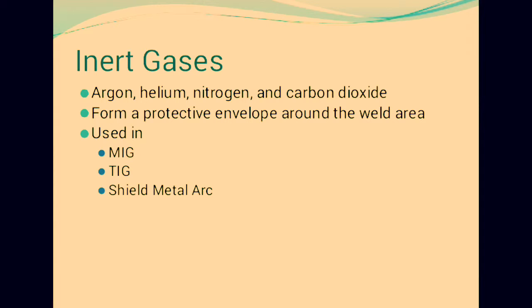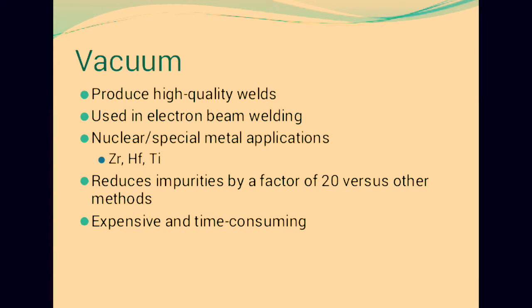Vacuum welding is used for special nuclear applications with metals like zirconium, hafnium, and titanium. It reduces impurities by a factor of 20 versus other methods, so it is very important but expensive and time consuming. It is, however, a useful type of welding.